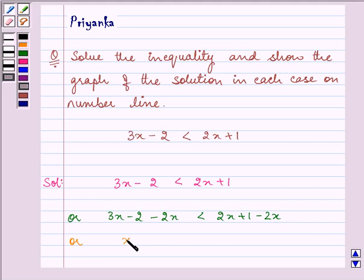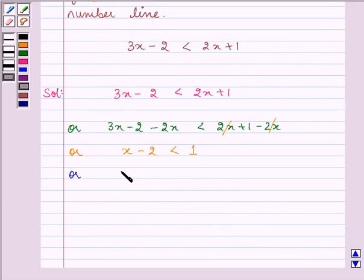Further, we have x minus 2 is less than 1. Now, on adding 2 on both sides, we have x minus 2 plus 2 is less than 1 plus 2.